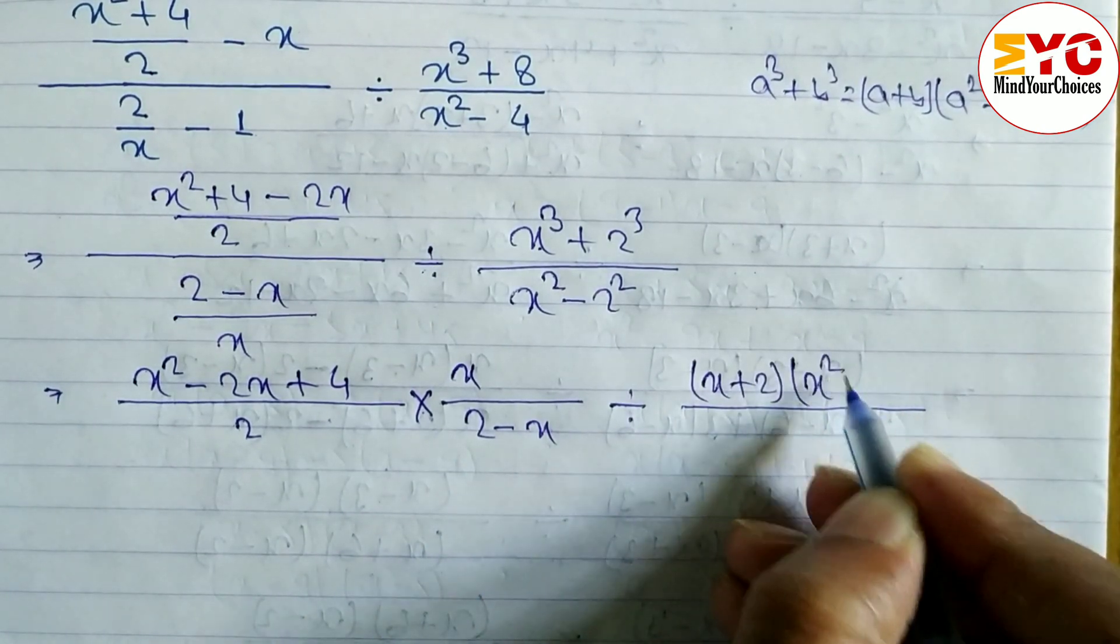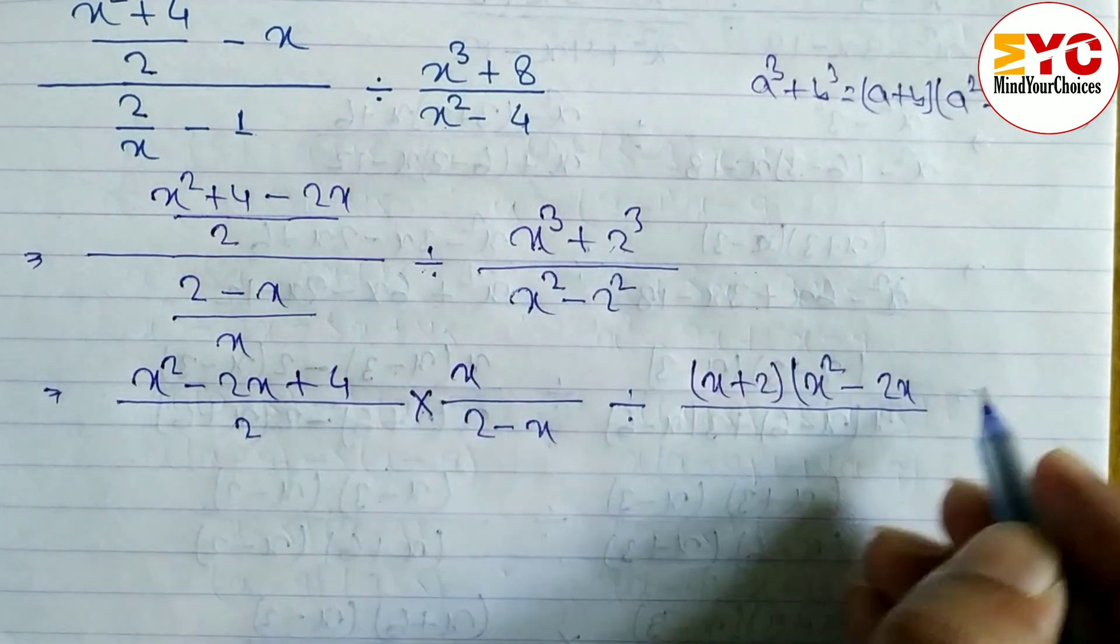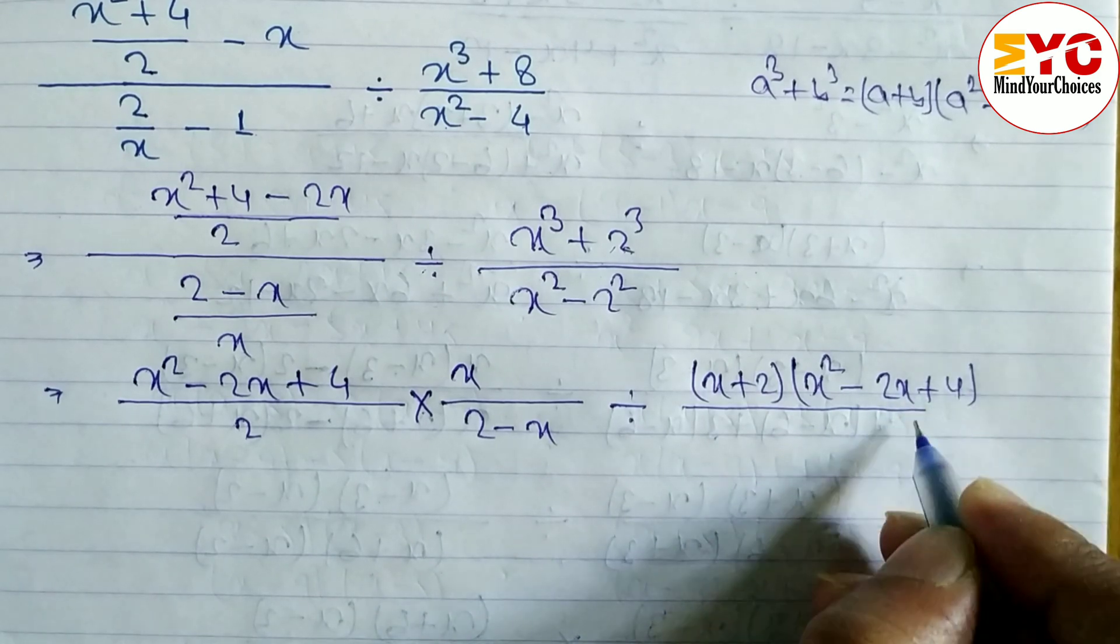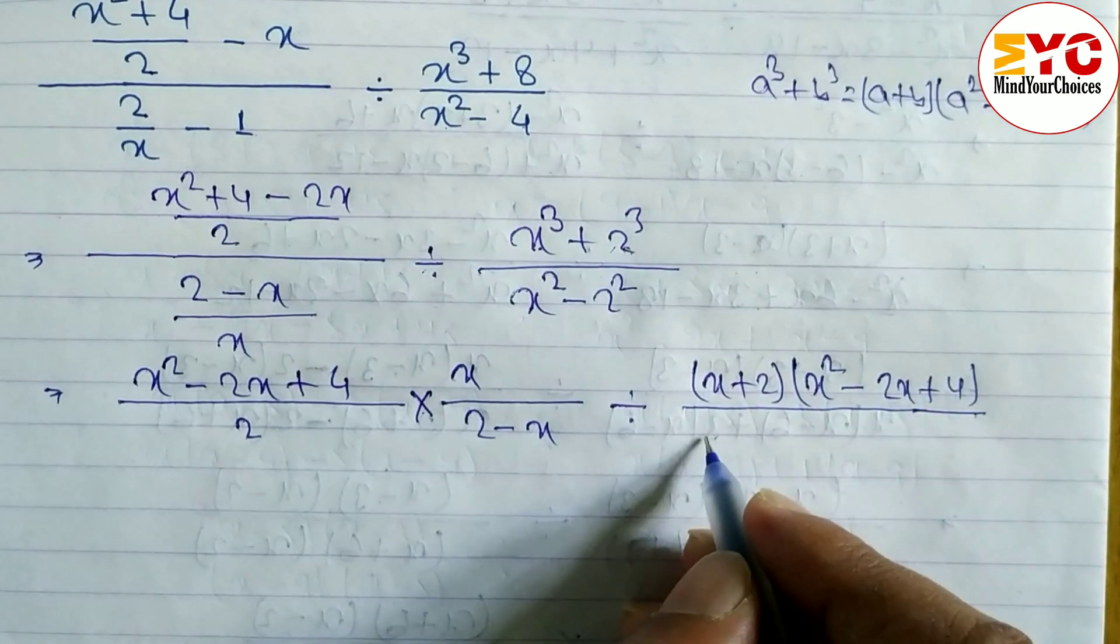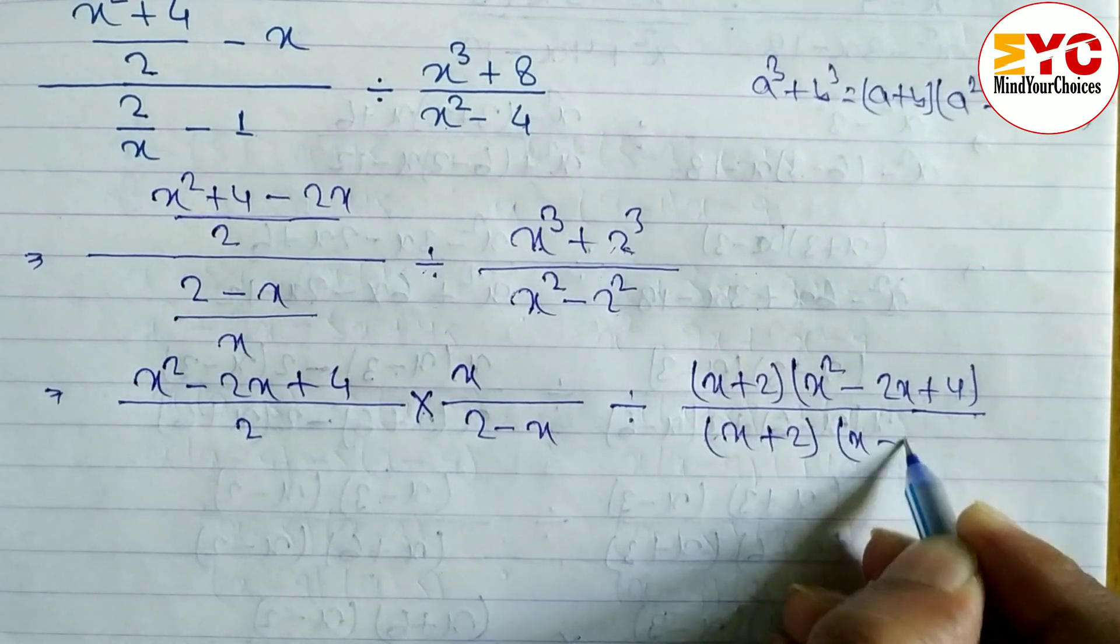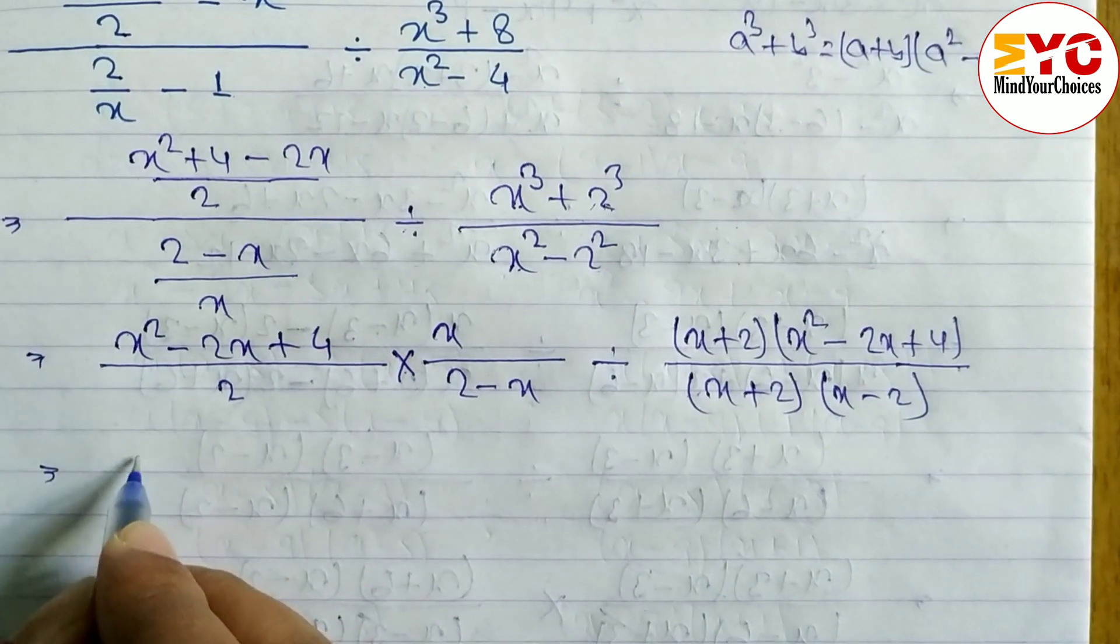a into b means 2x, and b² means 2², 2² means 4. We can write here divided by a² - b², so we can write x + 2, x - 2. Hope you understand up to here.